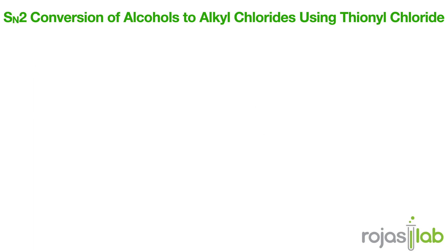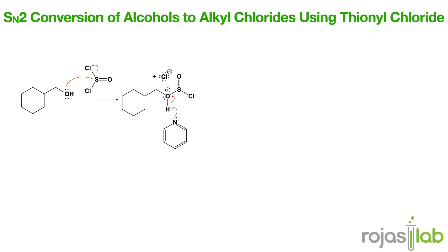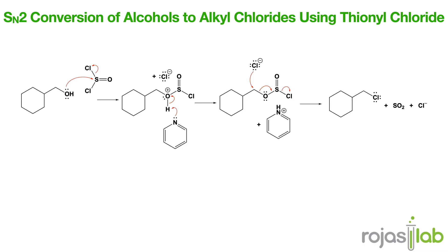Let's talk about using thionyl chloride for substitution reactions. In this reaction, we're converting an alcohol to an alkyl chloride via thionyl chloride (SOCl2). In the mechanism, the first step is formation of an alkyl chlorosulfite intermediate — this occurs when the oxygen on the hydroxyl group attacks thionyl chloride, kicking off a chloride. The chloride then attacks via backside displacement, giving SO2 and HCl as byproducts. Since this is an SN2 concerted mechanism, inversion of configuration results.